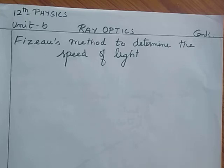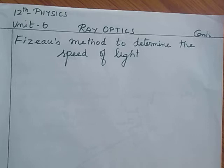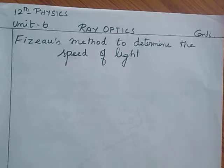Fizeau is one who gave an experiment to find the speed of light. We know very well light travels with the maximum speed, that is 3 × 10⁸ meters per second. Fizeau is the scientist who gave an experiment to find the speed of light. Let me see the apparatus of the experiment.